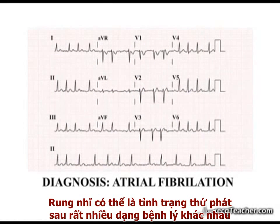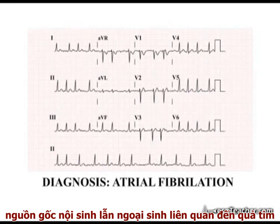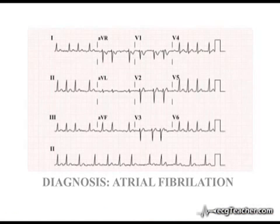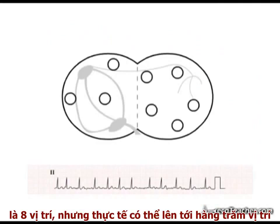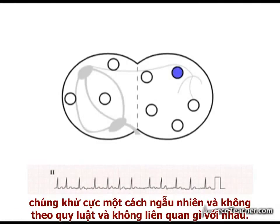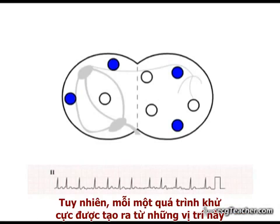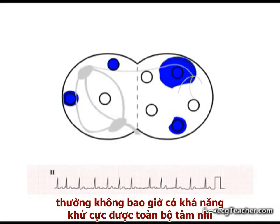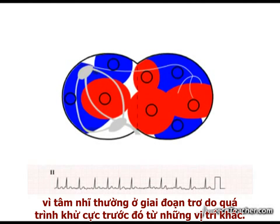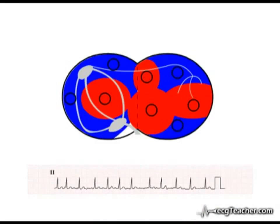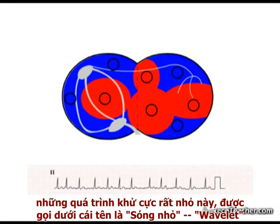Atrial fibrillation arises secondary to many different disease states, both intrinsic and extrinsic to the heart. In this arrhythmia, multiple sites within the atria — in the example shown here eight, but often many hundreds — are depolarizing randomly and independently of one another. However, the individual depolarization events generated by these sites never manage to completely depolarize the atria, as they run into refractory zones generated by earlier discharges from other sites. These relatively small depolarization events are therefore referred to as wavelets.